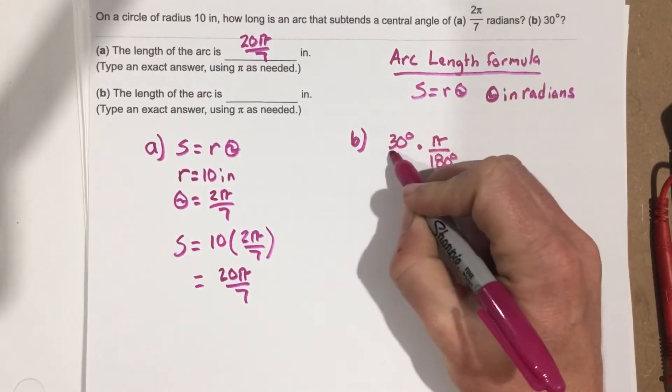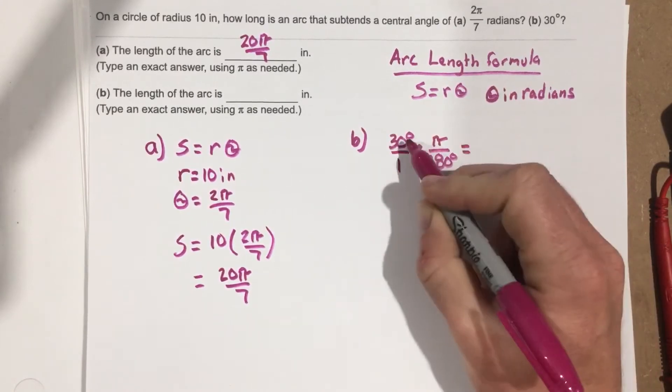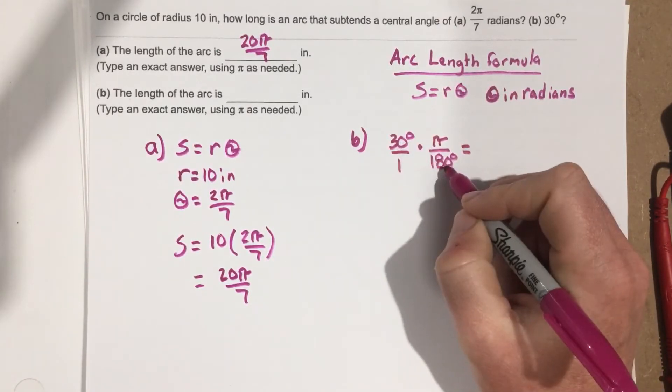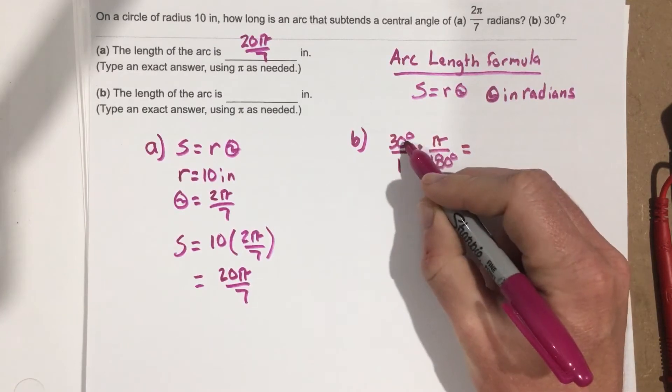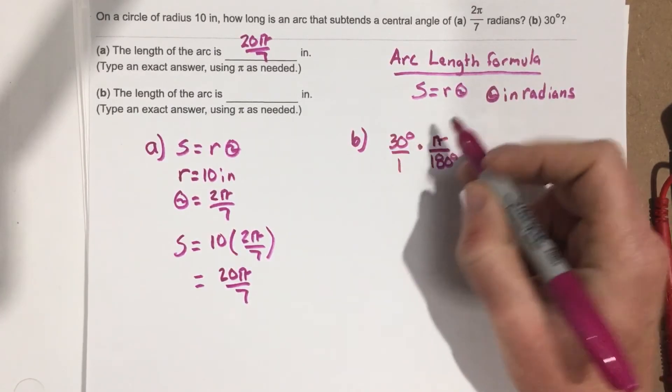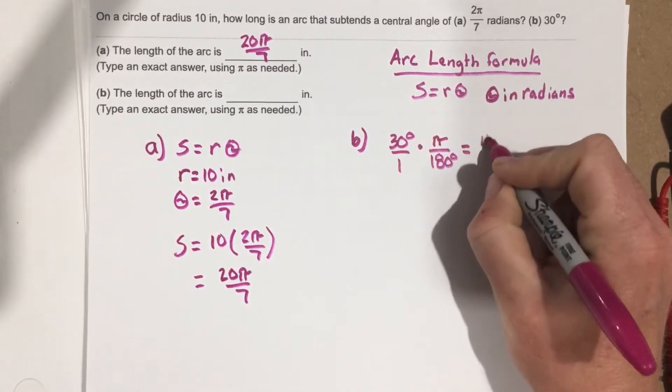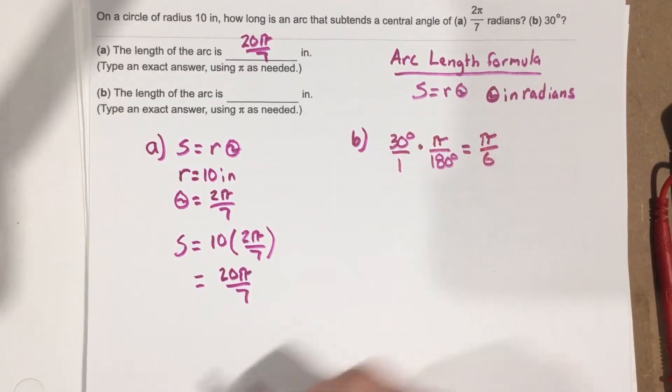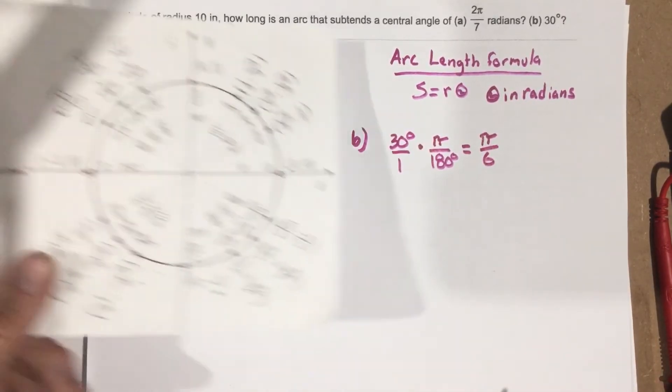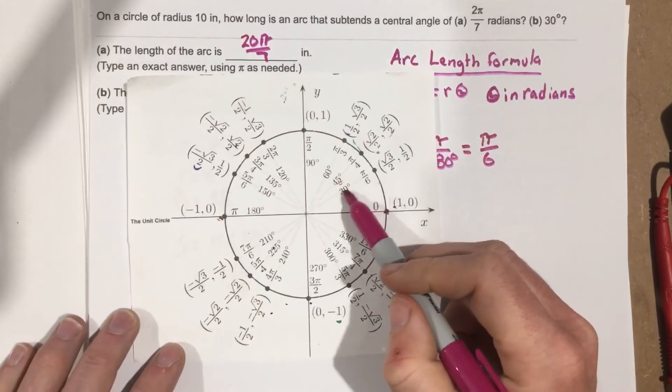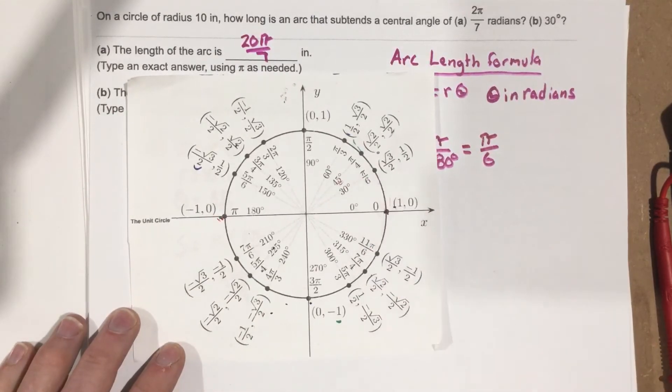When you multiply those, you end up with 30 over 180 will reduce to basically 1 over 6. So we can have this be π over 6. And if you look on the unit circle, you would see that 30 degrees is π over 6 on the unit circle.